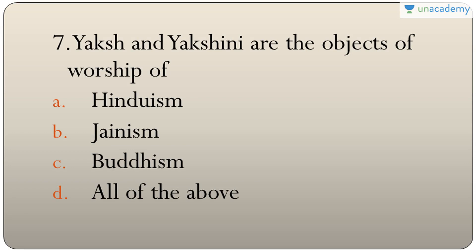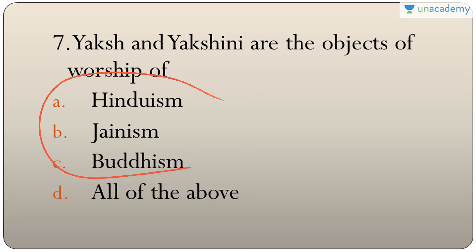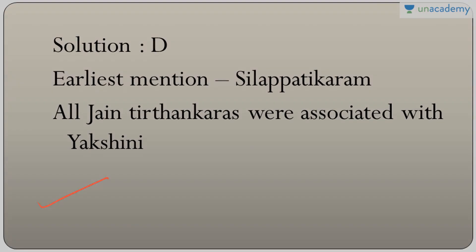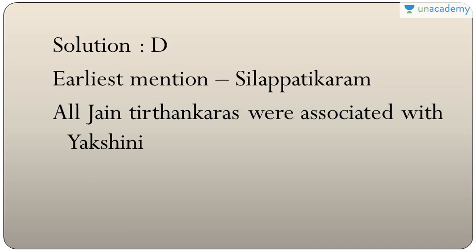Question seven: Yaksha and Akshini are objects of worship in Hinduism, Jainism, and Buddhism — all three. So the answer is D — all of the above. The earliest mention of Yaksha and Akshini is found in Silappadikaram, and all Jain Tirthankaras were associated with Akshini.